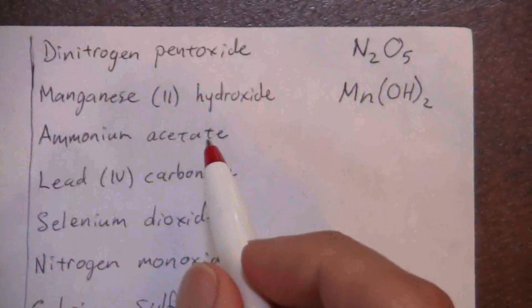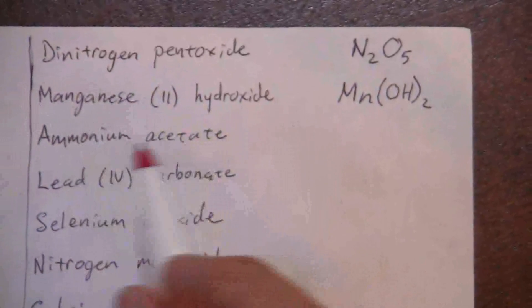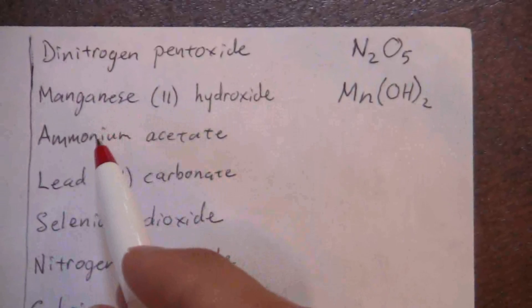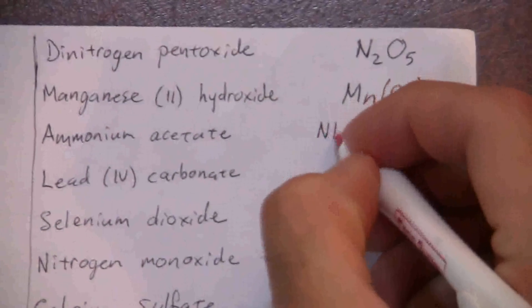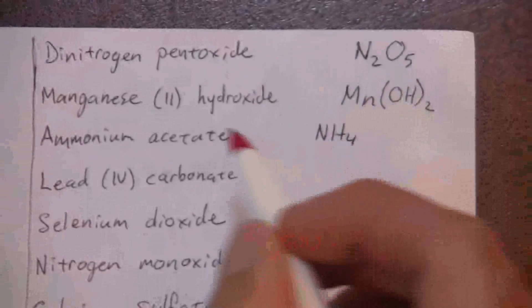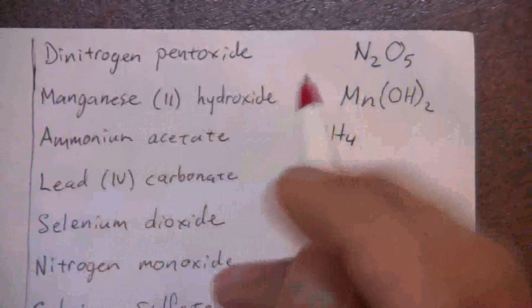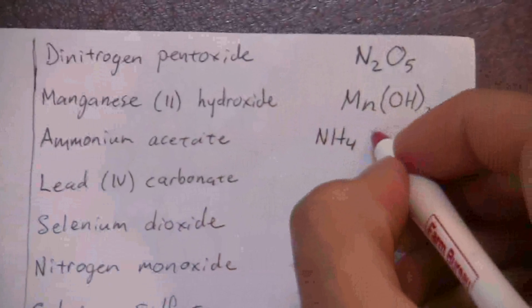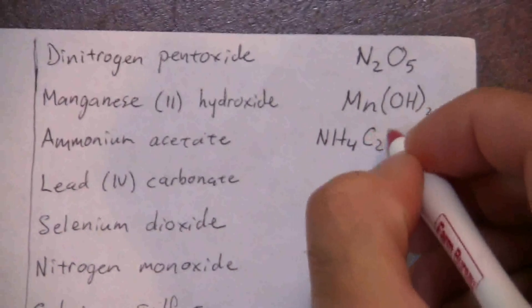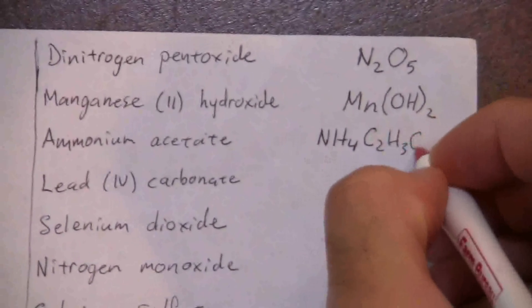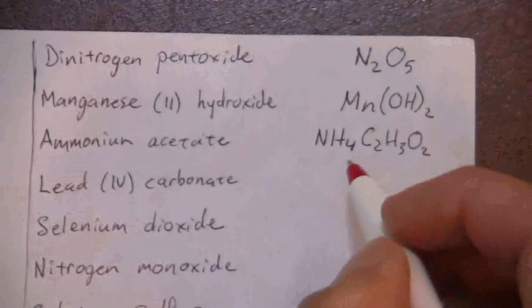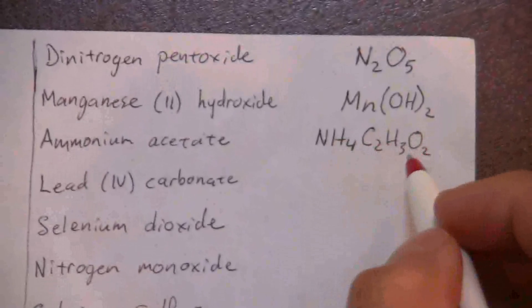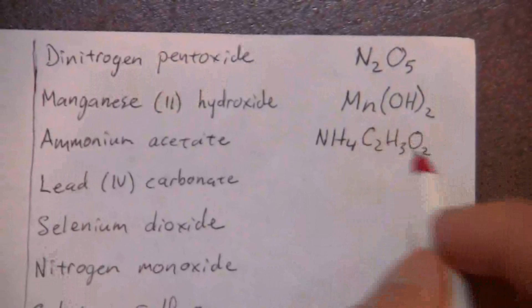Here we have ammonium acetate. Both of these are polyatomic ions. The ammonium ion is NH4 with a positive one charge, and the acetate ion is C2H3O2 with a negative one charge, so they balance out together one to one: NH4C2H3O2.